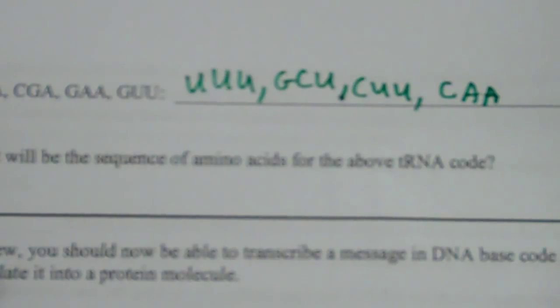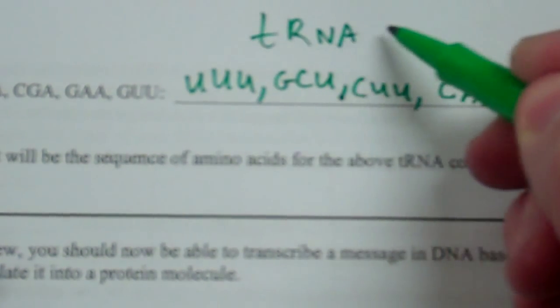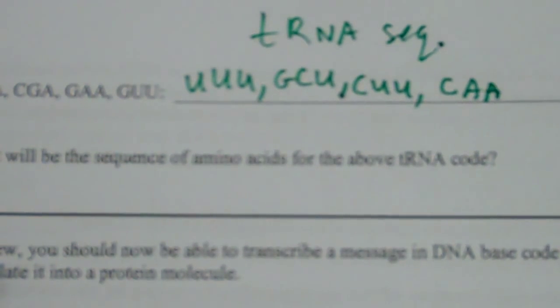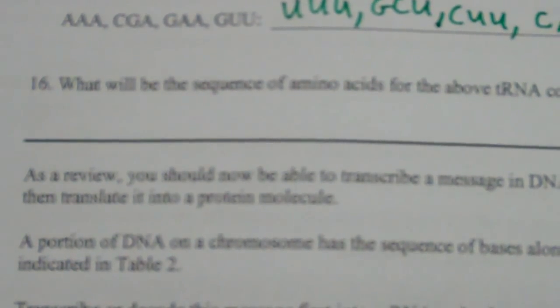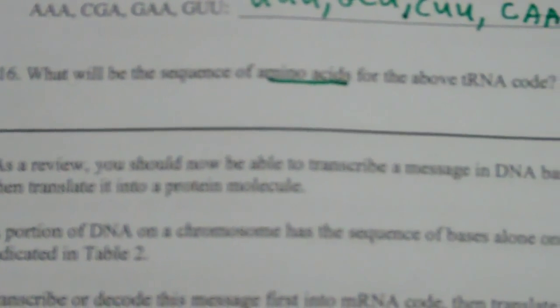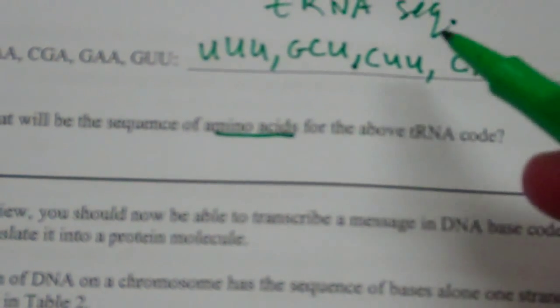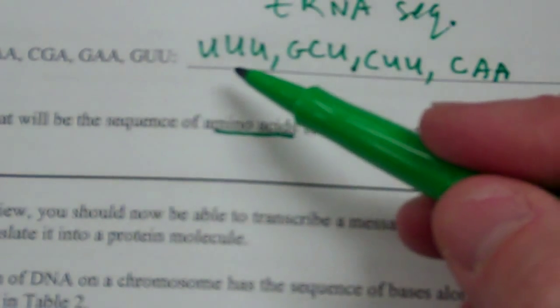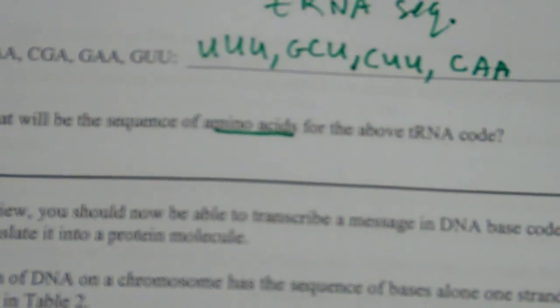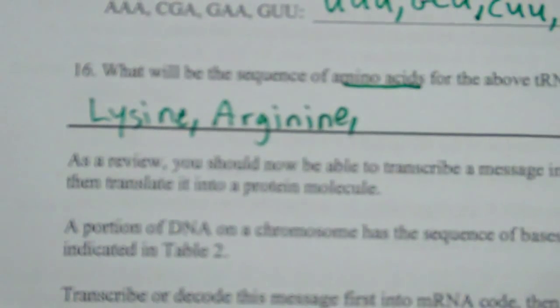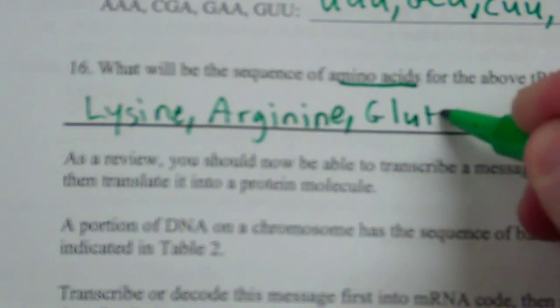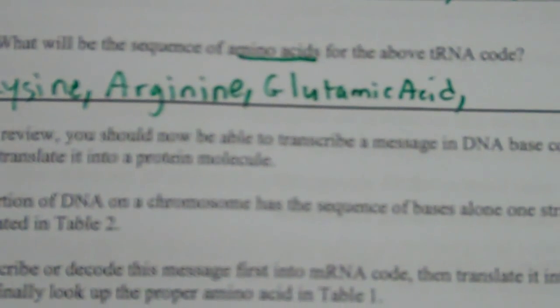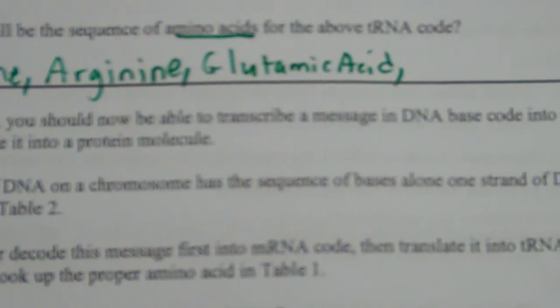The important thing is I was asked for the tRNA sequence, so that means the sequence of bases. The next question, 16, asks: what will be the sequence of amino acids for the above tRNA code? So this is my tRNA code — what amino acids does it code for? You've got to look at your table: UUU codes for lysine, GCU codes for arginine, CUU codes for glutamic acid, and CAA codes for valine.